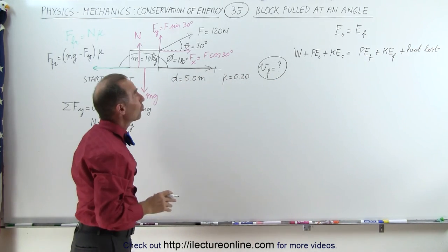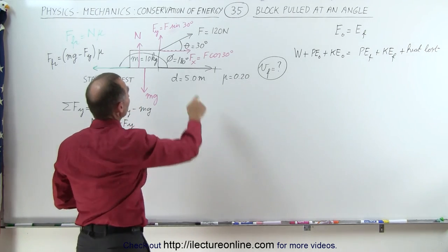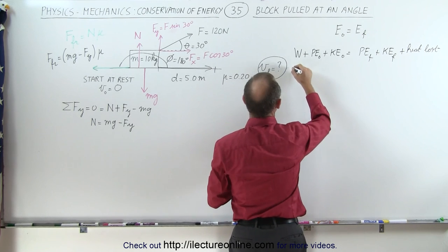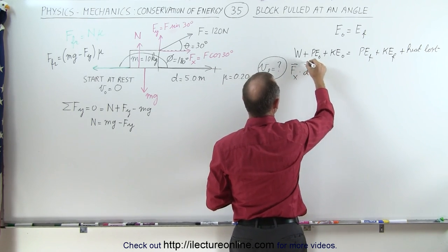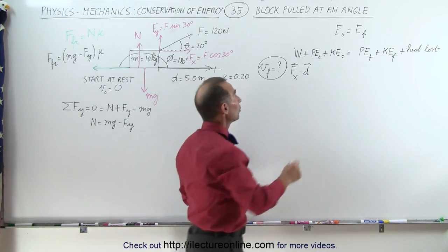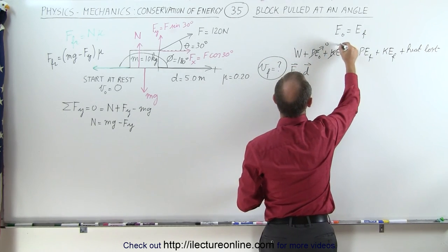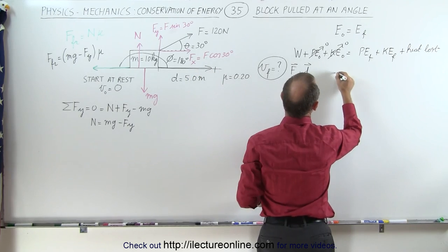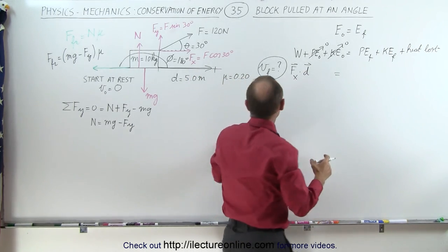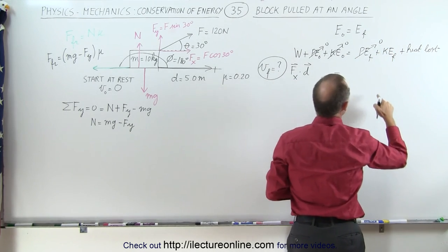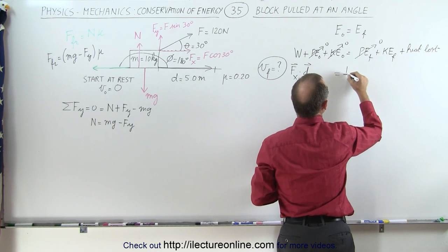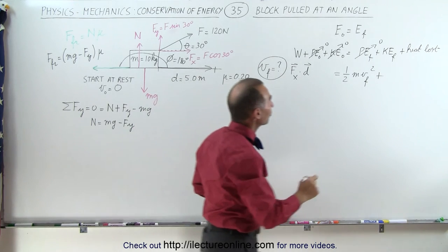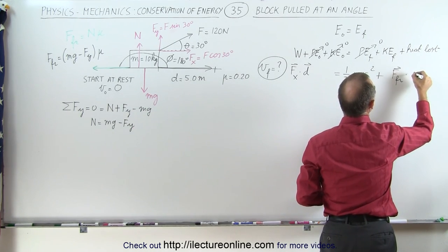Let's see which of those components we have. Is there any work put into the system? Yes, because there's a force component in the x direction that pulls the block in the same direction as the displacement. So the work done equals the force component in the x direction multiplied by the displacement — that is a dot product. There is no initial potential energy because the block is on the ground, and no initial kinetic energy because the block starts at rest. There's no final potential energy since the block gains no height, but it does have final kinetic energy equal to one-half m times v_final squared, plus the heat loss due to friction, which is the friction force dotted with the displacement.